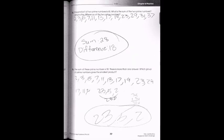The next problem says: the product of two prime numbers is 65. What is the sum and difference of the two prime numbers? X times y equals 65, and we can have 5 and 13. The sum is going to be 18, and the difference is going to be 8.